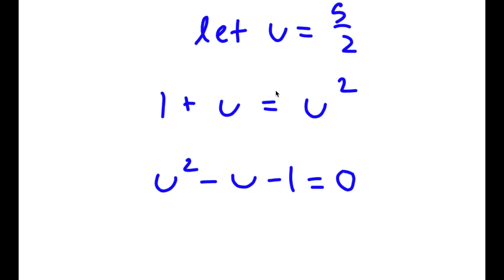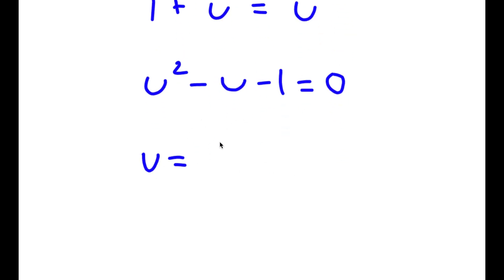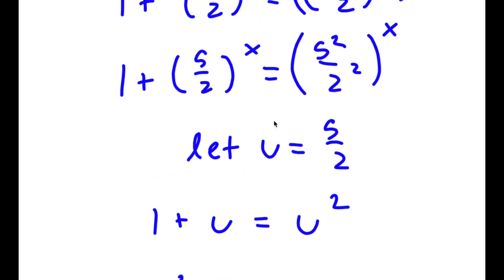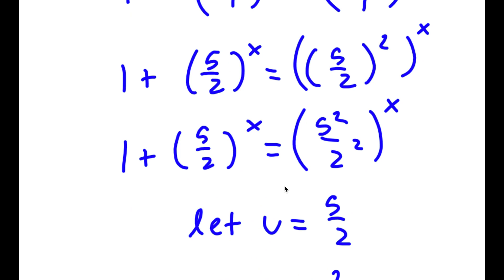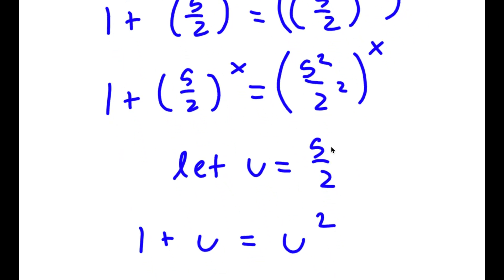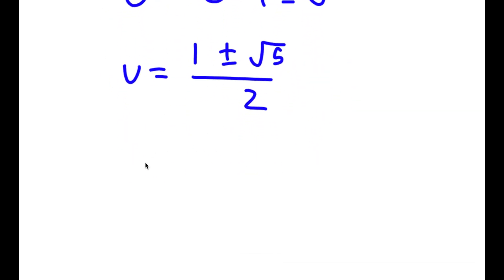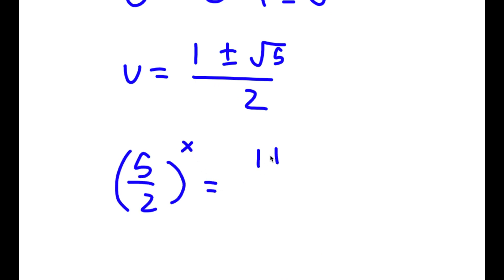So I'm going to use the quadratic formula to solve this. If you do use the quadratic formula, you should get u is equal to 1 plus or minus the square root of 5, all over 2. Now, remember how we said u is equal to 5 over 2 to the power of x, so this means that 5 over 2 to the power of x is equal to 1 plus or minus the square root of 5, over 2.